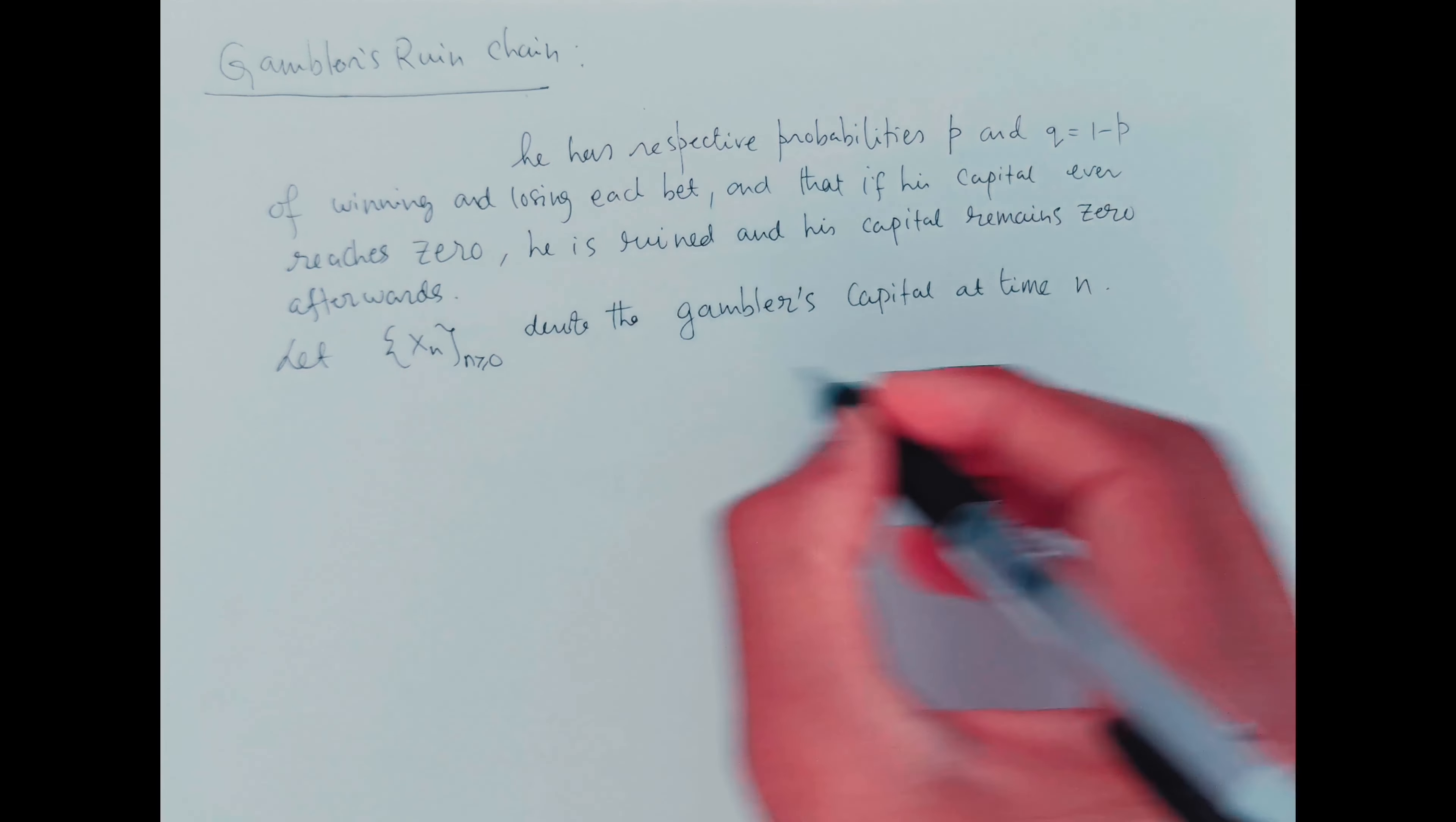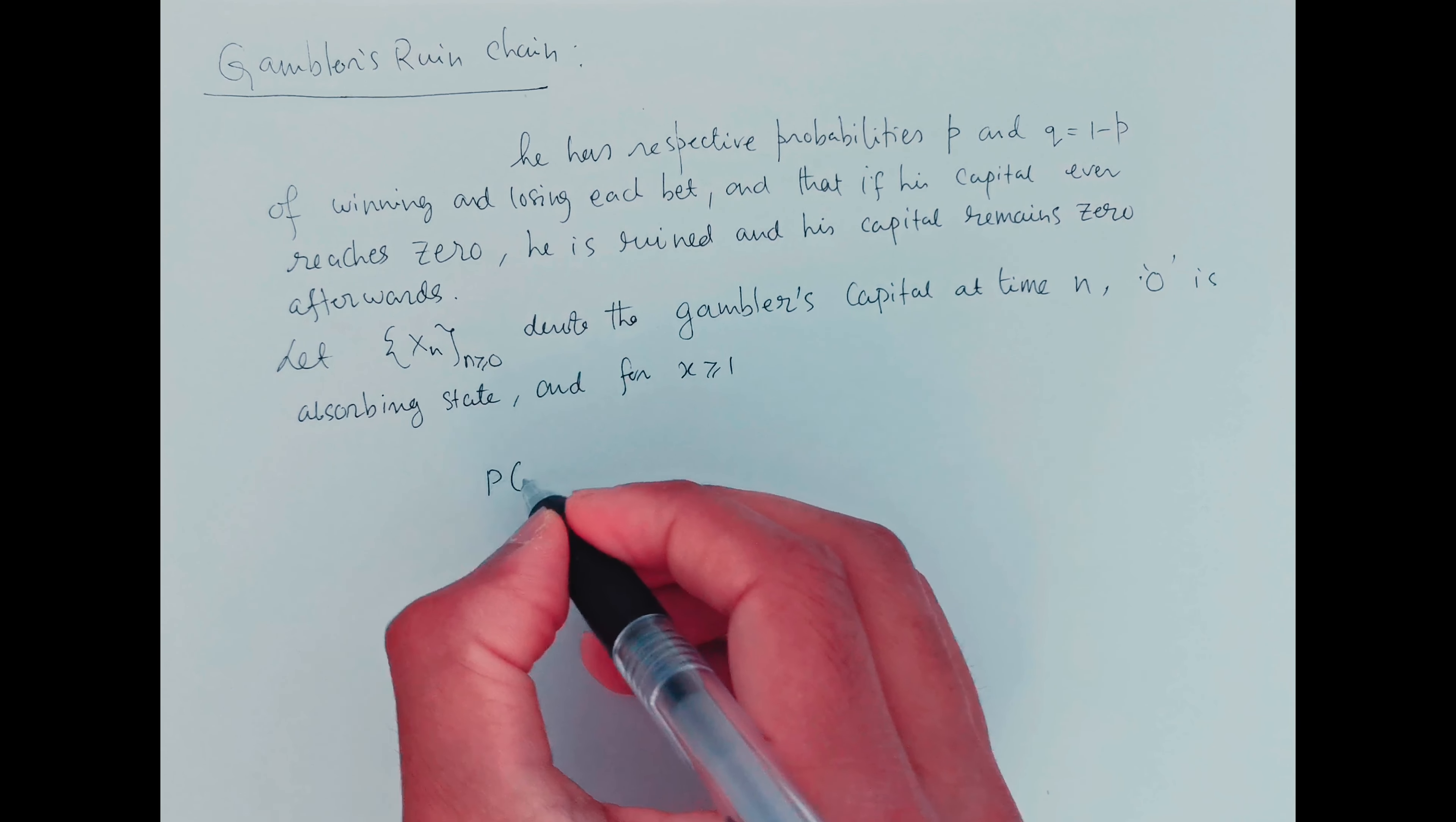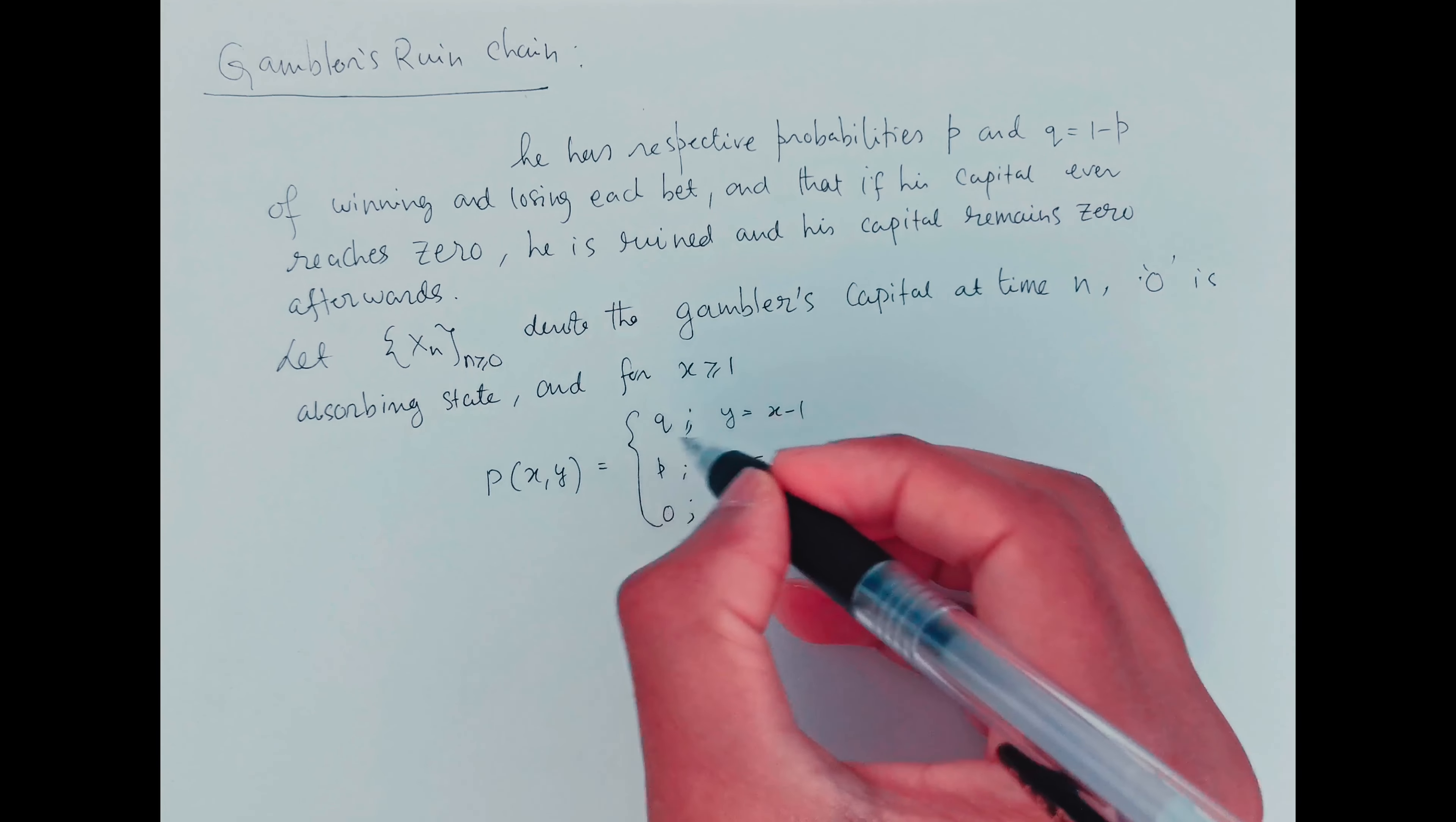And for x greater than or equal to 1, the transition function is q if y equals x minus 1, and p if y equals x plus 1, and 0 elsewhere.